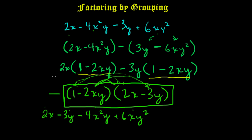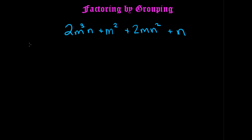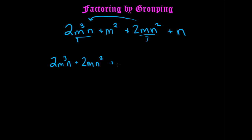Let's do one more quick example and then end the video. We have 2M³N plus M² plus 2MN² plus N, and you're asked to factor it completely. Remember, we're doing factoring by grouping, so look through the expression, figure out what's similar and what's not, and start grouping. Right off the bat, I noticed the 2M and N in the first term and the third term are similar. So I'm going to move the third term next to the first, giving us: 2M³N plus 2MN² plus M² plus N.